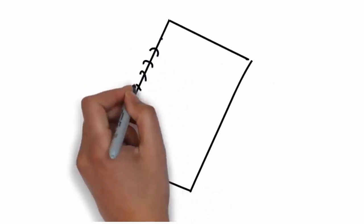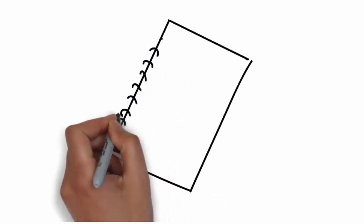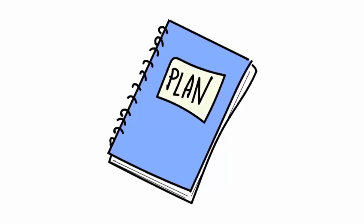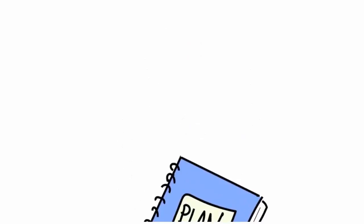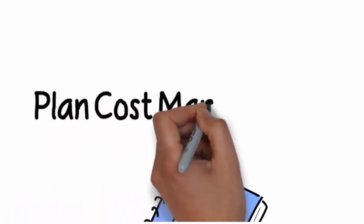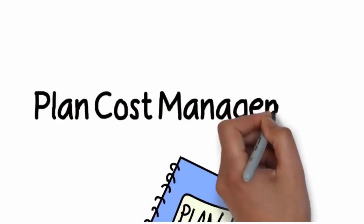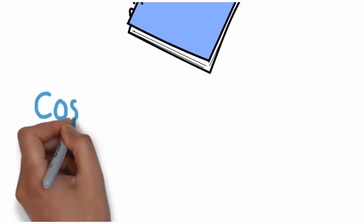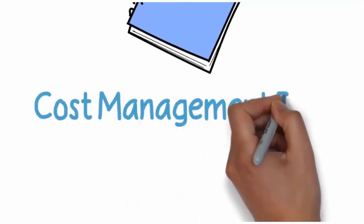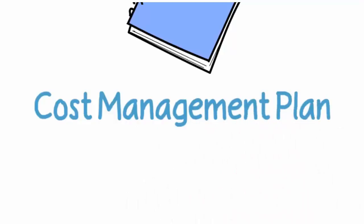Cost management is pretty simple — there are only a few processes. One, like all the other knowledge areas, is the planning of our cost management: how are we going to plan for it, what terms are we going to use, what monetary values, how often, where do we store things, how frequently do we run meetings — things like that. Our output is going to be our cost management plan.